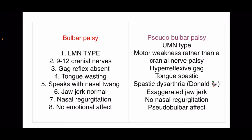Pseudobulbar palsy is a UMN type of pathology — a motor weakness rather than cranial nerve palsy. Because it is spastic, reflexes are hyperreflexic: there is a hyperreflexic gag reflex, the tongue is spastic, and speech is a spastic dysarthria — described as Donald Duck speech — due to spasticity of the tongue and laryngeal muscles. The jaw jerk is exaggerated. There is no nasal regurgitation. Emotional lability is a very important association with pseudobulbar palsy.